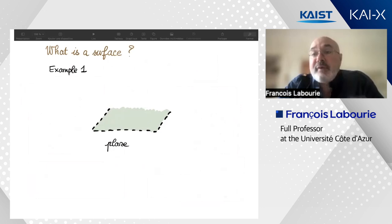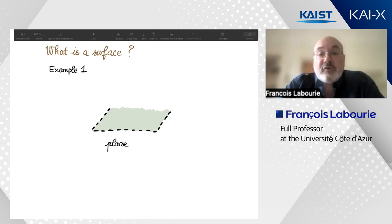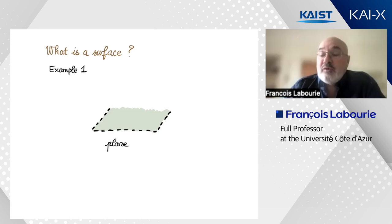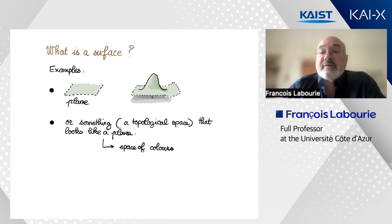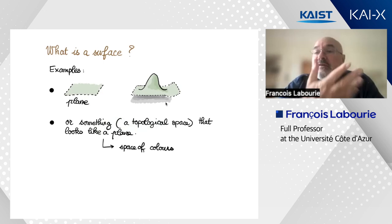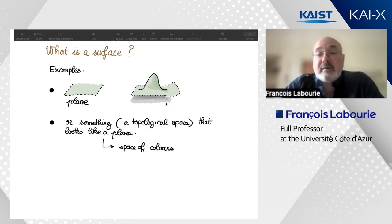Let's start with something very elementary: what is a surface? The basic example is the plane, but we are topologists for this first part and we are allowed to deform the plane. A surface for us is a topological space that locally looks like a plane — for instance, this sort of hat is a surface for us. The definition is intrinsic: you do not need to see it as part of a bigger space.